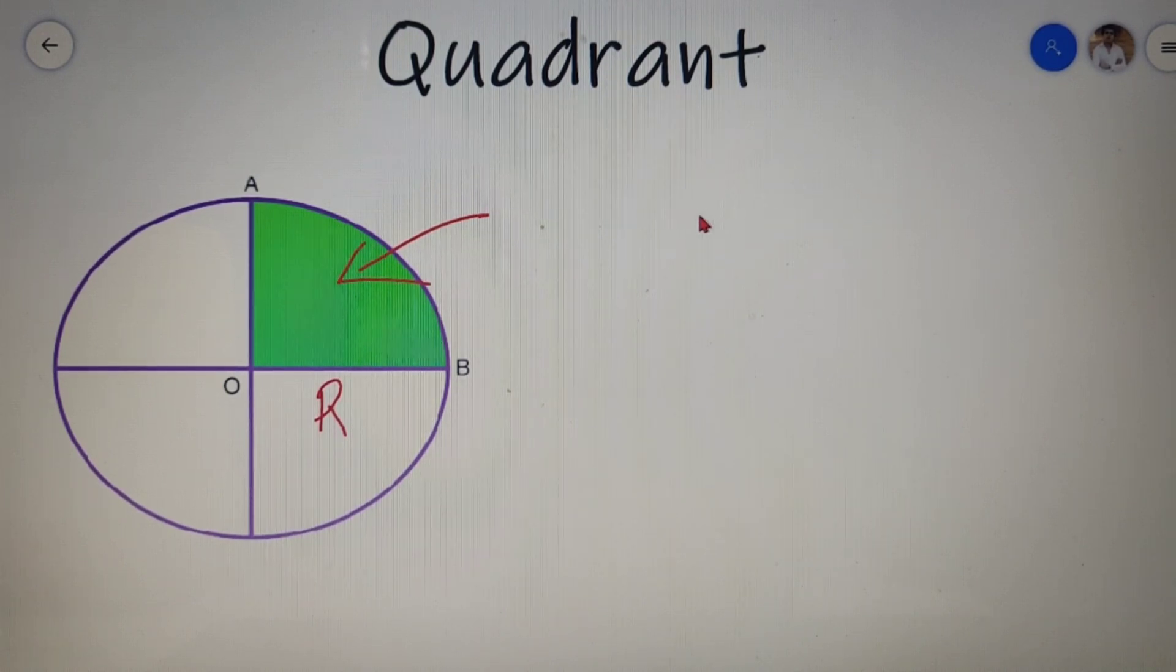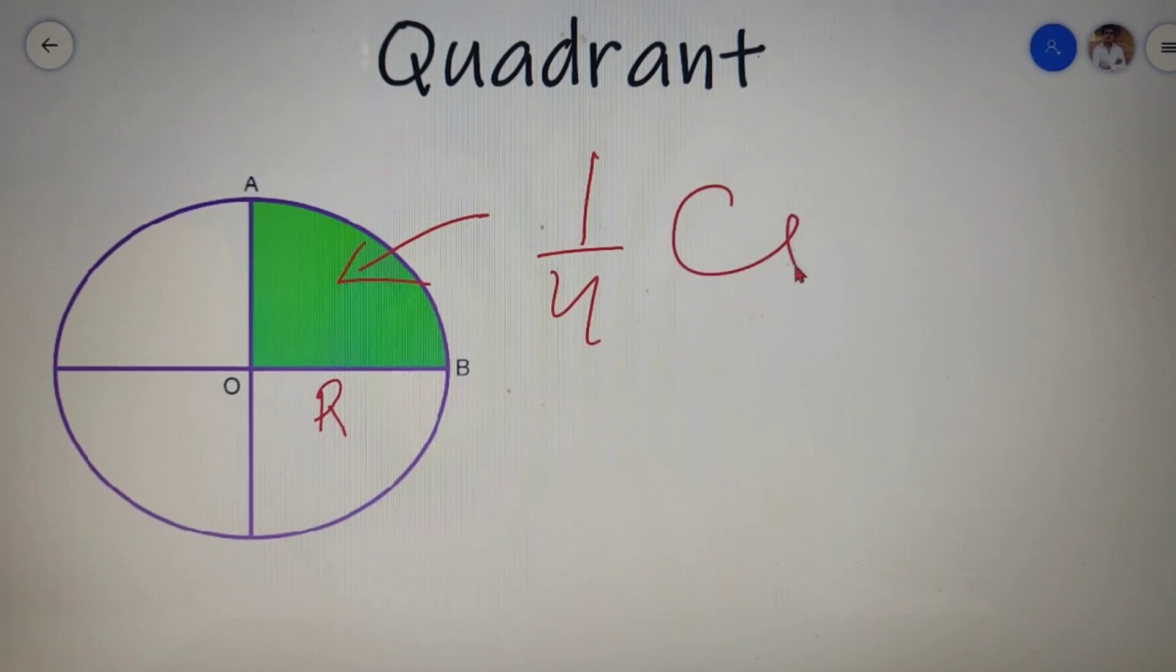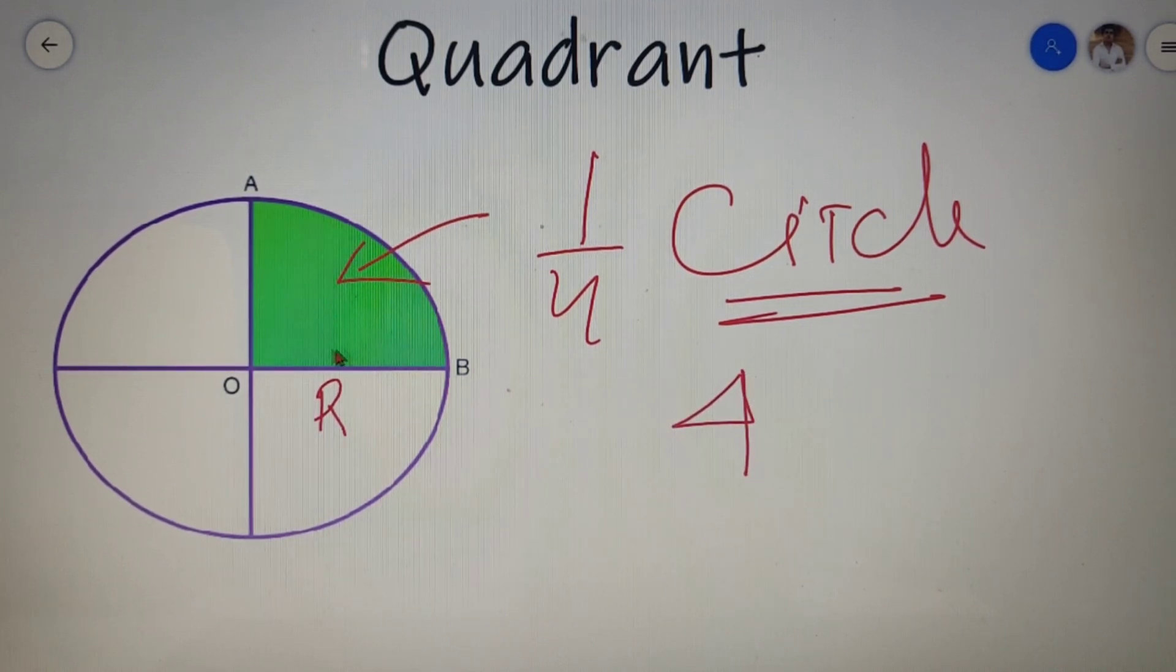Now, a quadrant of a circle is nothing but one-fourth of a circle. So basically I can say that a circle is formed of four quadrants. The most general numbering of the quadrants is as follows.